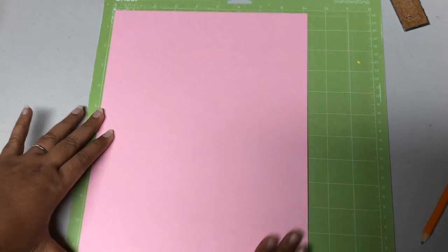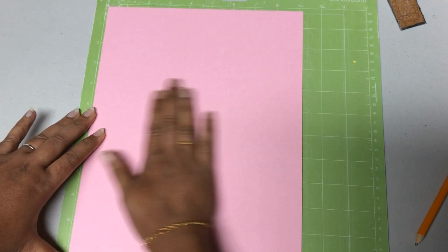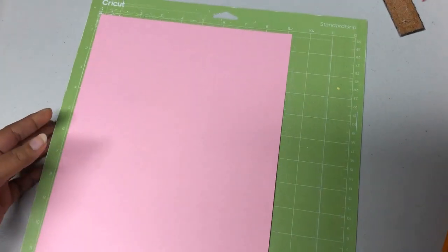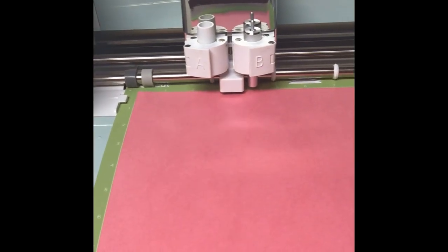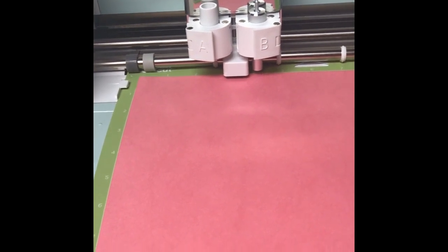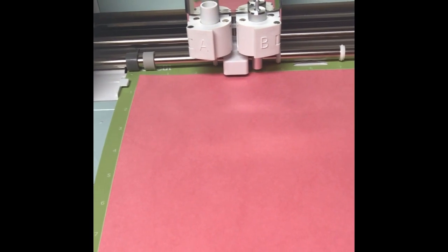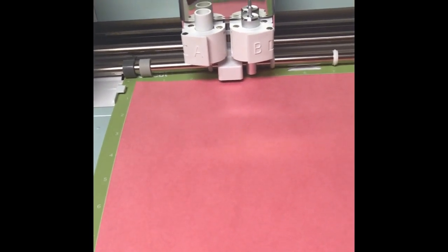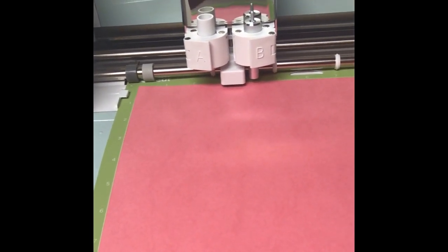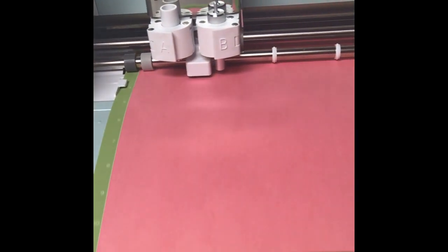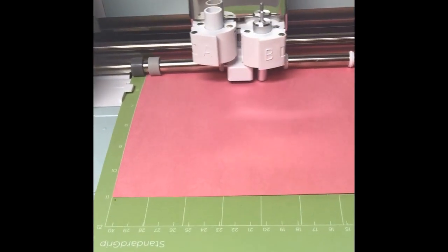Once we press go, the machine is going to start cutting your design that you just gave on your app. Just like it works just like your printer, it pulls the mat in.